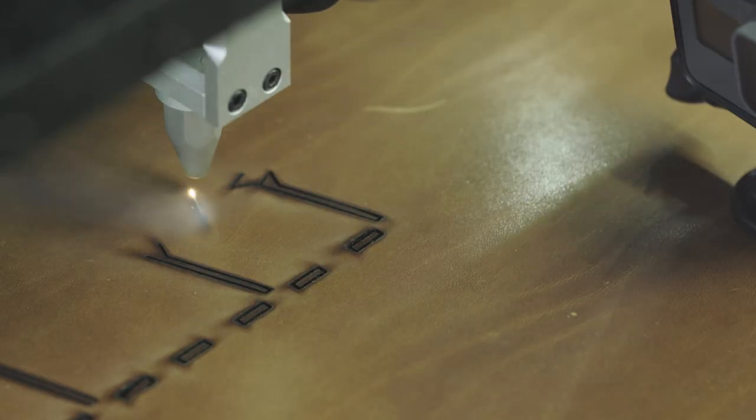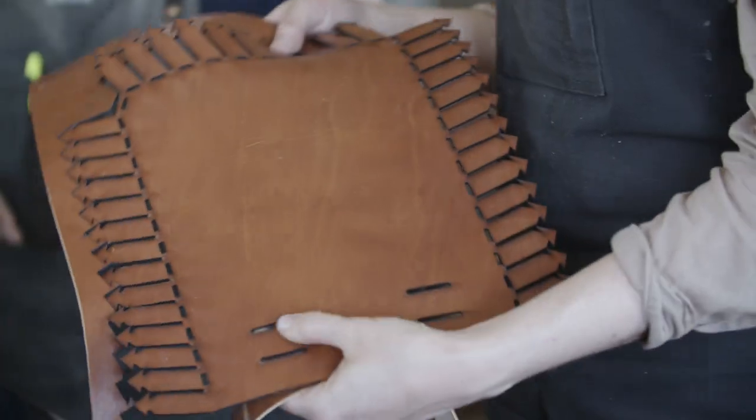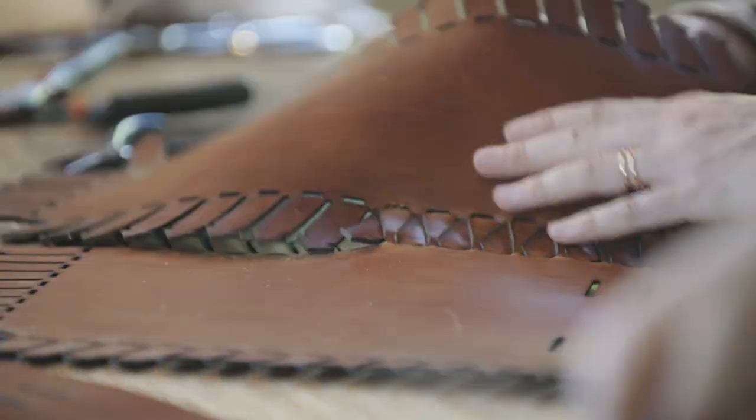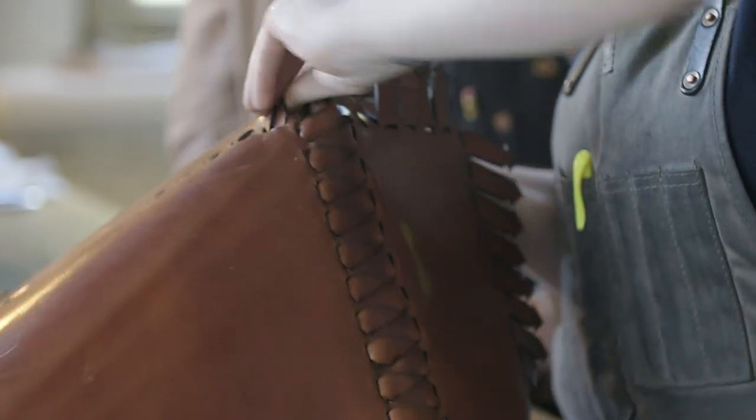We are gonna start working on our tab together tote. A project that really shows off the intricacies of the cutting that the laser can do. Once we get the side pieces all woven together then we're gonna attach the bottom.